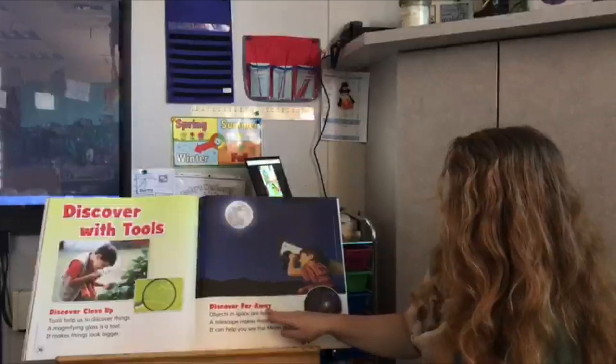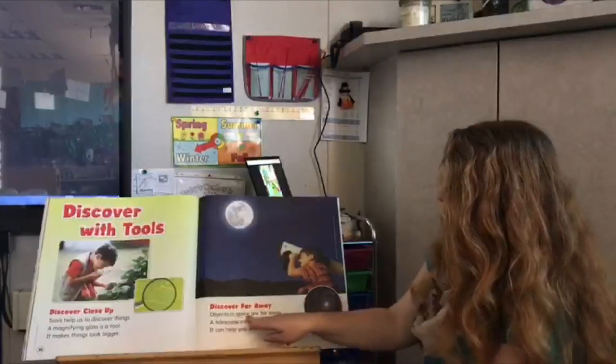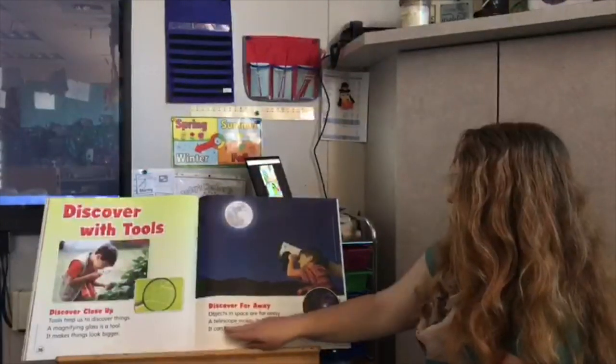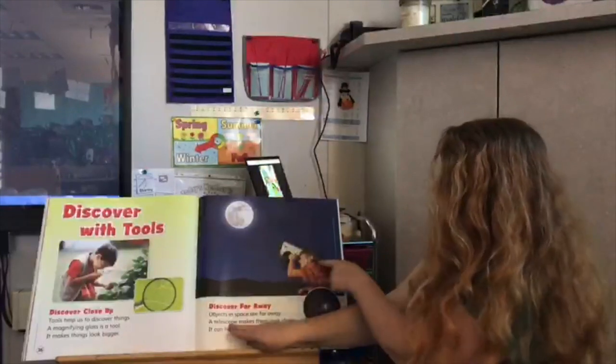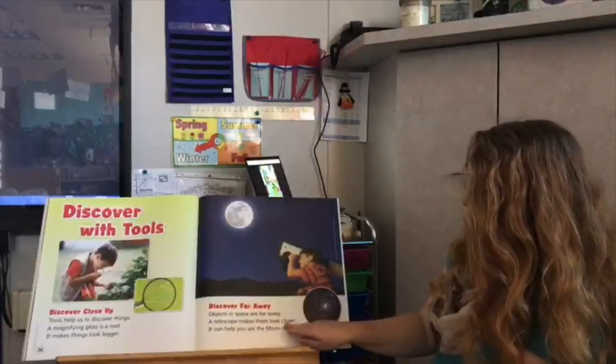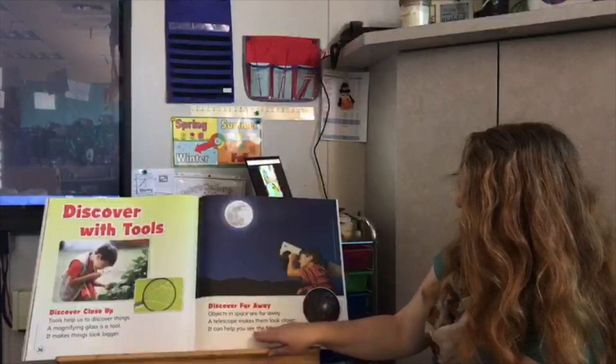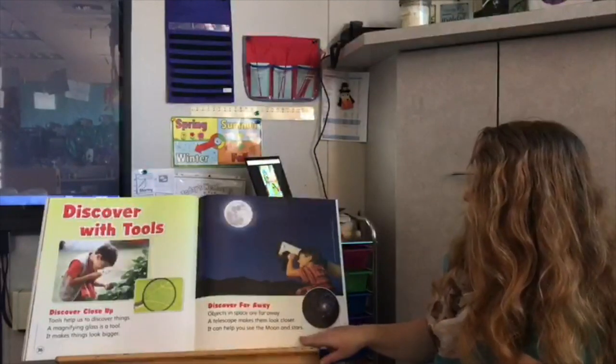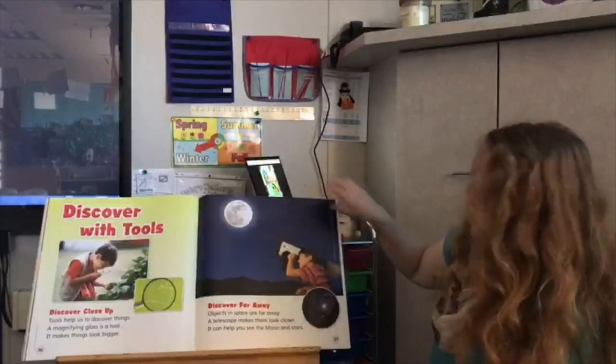Discover far away. Objects in space are far away. A telescope makes them look closer. It can help you see the moon and stars. Like a magnifying glass, but stronger.